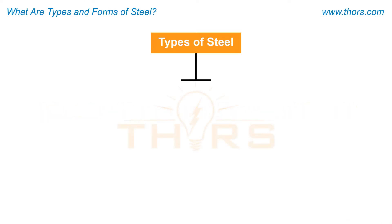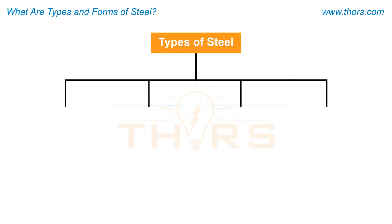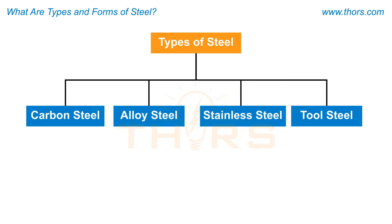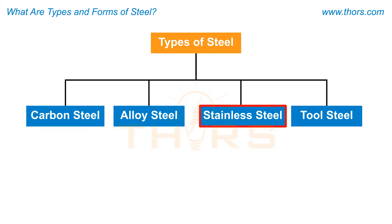Four different types of steel are broadly produced, including carbon steel, alloy steel, stainless steel, and tool steel. Each steel varies in the amount of carbon and alloy content.